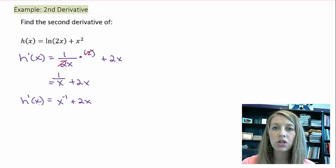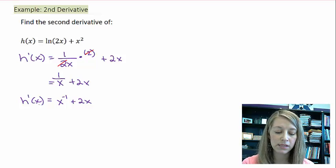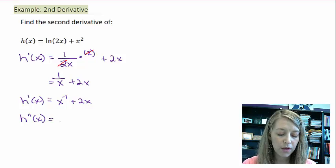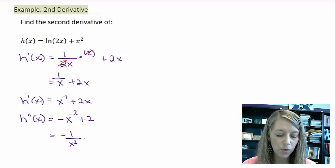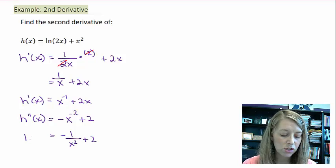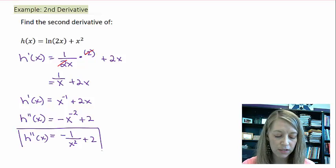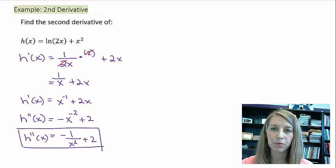And now I don't even need to utilize exponential or log derivative rules, because now I can just take the second derivative of it as normal. So, negative x to the negative 2 plus 2, or if I rewrite this back, negative 1 over x squared plus 2. And so, we have just found the second derivative of this example.